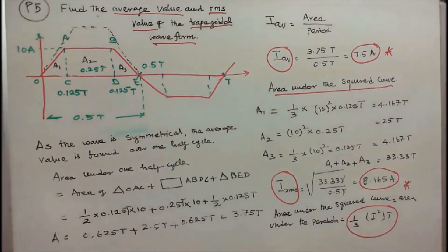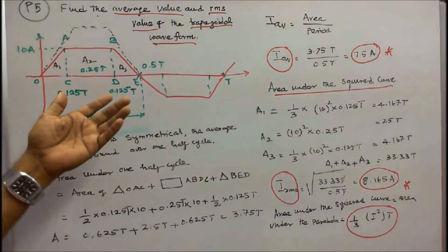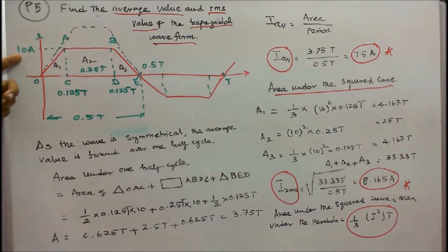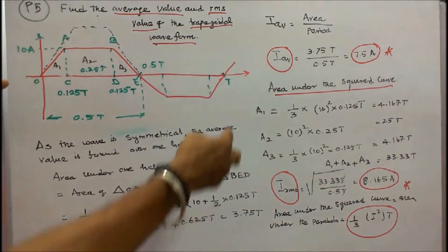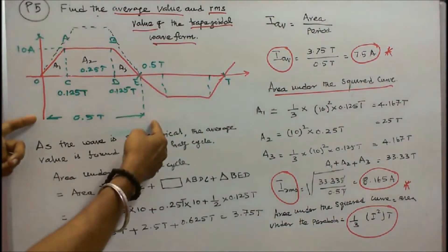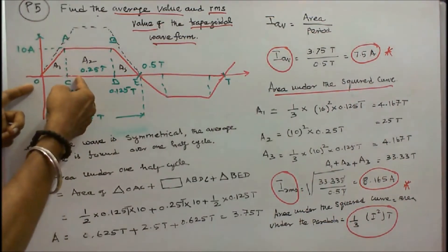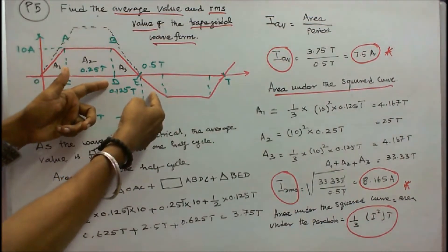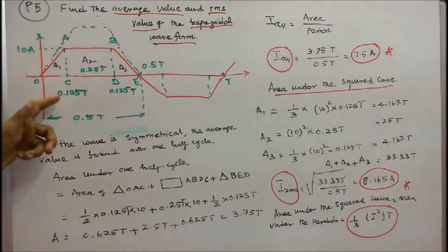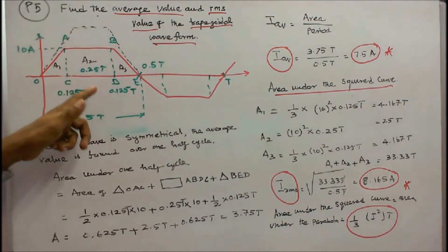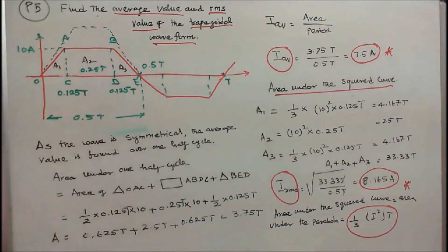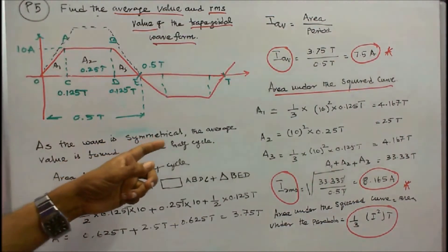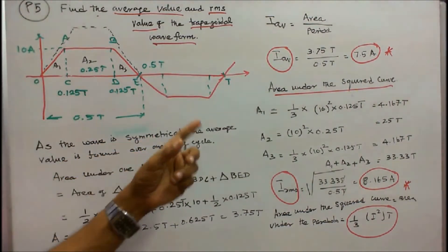Problem 5: Find the average value and RMS value of the trapezoidal waveform shown in the figure. This waveform is symmetrical. The peak is 10 amps, the total period is T seconds, and half a cycle is 0.5T. The segment OC equals 0.125T, CD equals 0.250T, and DE equals 0.125T, so 0.125T plus 0.250T plus 0.125T equals 0.5T. As the wave is symmetrical, the average value is found over one half cycle.